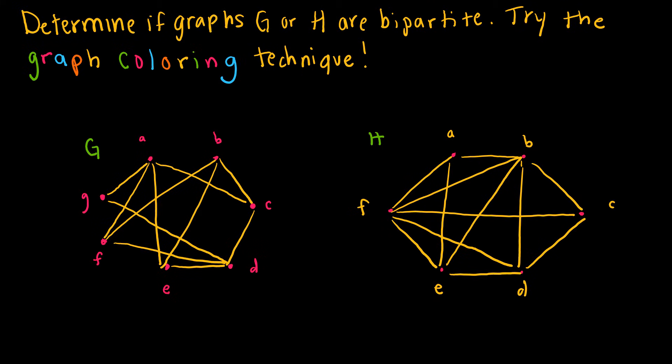Now that we know what a bipartite graph is, we want to look at how to determine if a graph is in fact bipartite. I have two graphs here, and neither are written in the normal bipartite graph form. The question is, can I redraw this graph so that I have two distinct subsets?